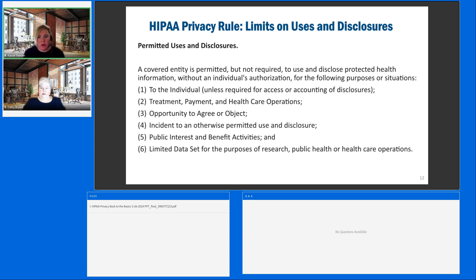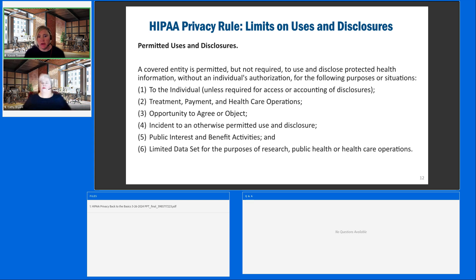The rule is asking for reasonable safeguards that you establish within your practice. Also, information can be released that's permitted for public interest. Some of those include public health, anything that involves victims of abuse or neglect or domestic violence, some health oversight agencies, governmental agencies that may have access without authorization needed, some judicial proceedings, law enforcement, funeral directors and coroners determining cause of death, tissue and organ donation, and if there's a concern of serious threat to health and safety or harm to the public. Information can also be shared with workers' compensation. And finally, limited data sets for the purpose of research — if you're doing research, you'll want to make sure that you have a data use agreement outlining the safeguards.